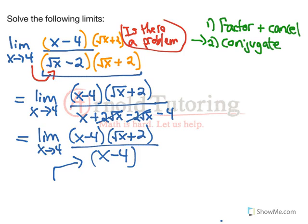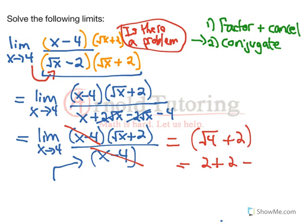Ask ourselves the question again. Is there a problem? Yes, the bottom would still go to 0 if we sub in 4. But what can we do? We can cancel our problem now. Now there's no more problem. Sub it in. Sub in 4 for what's left. So we have the square root of 4 plus 2. And that just equals 2 plus 2, which equals 4. So the limit as x approaches 4 there equals 4.